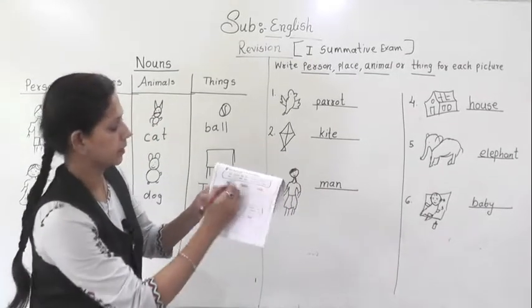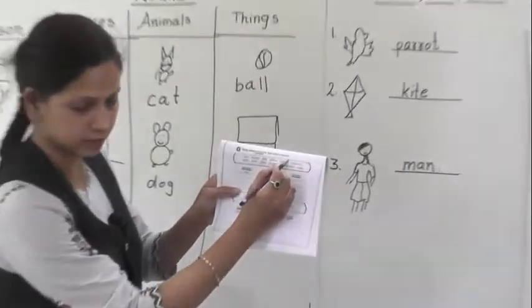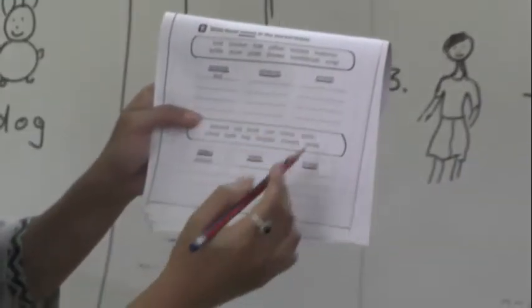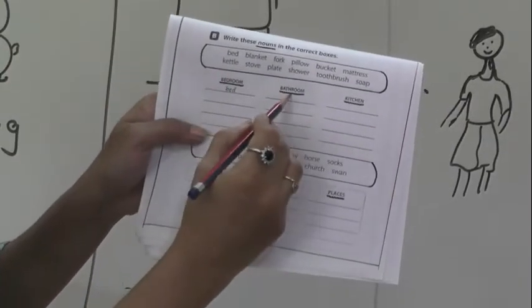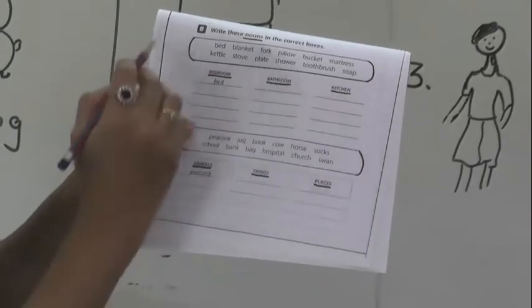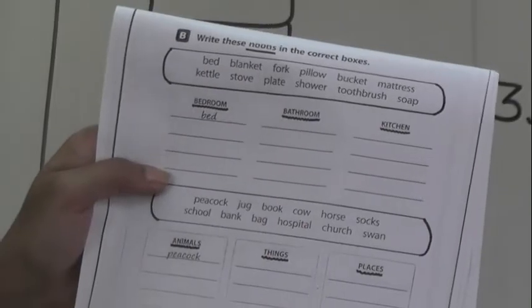Let's solve. Write these nouns in the correct boxes. So, there are some boxes and they are given a help box. You have to write a correct thing in a correct column. So, the first is bedroom, bathroom and the kitchen. The bed is in the bedroom. So, it is given already.